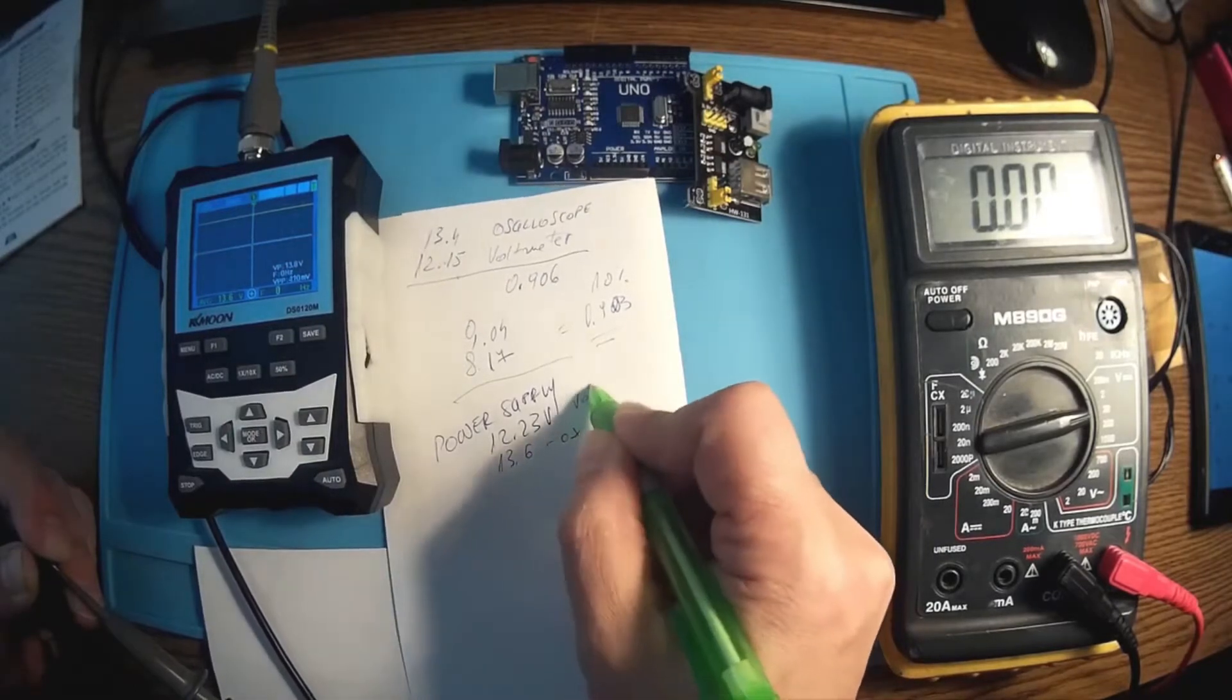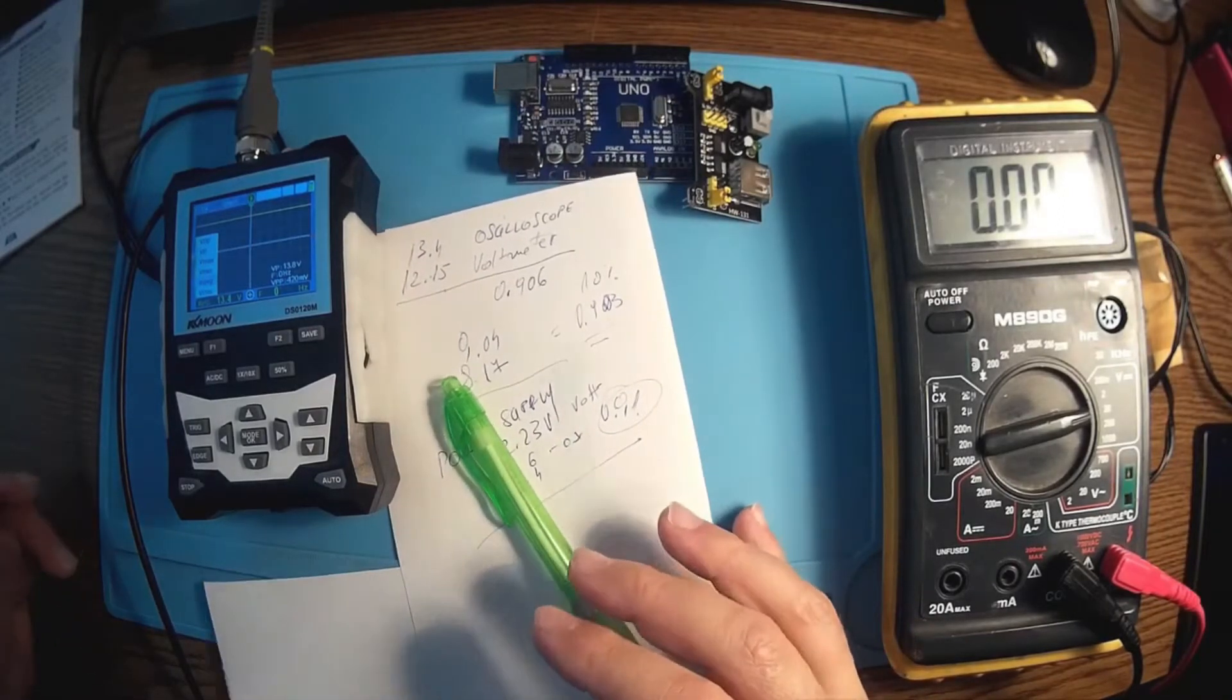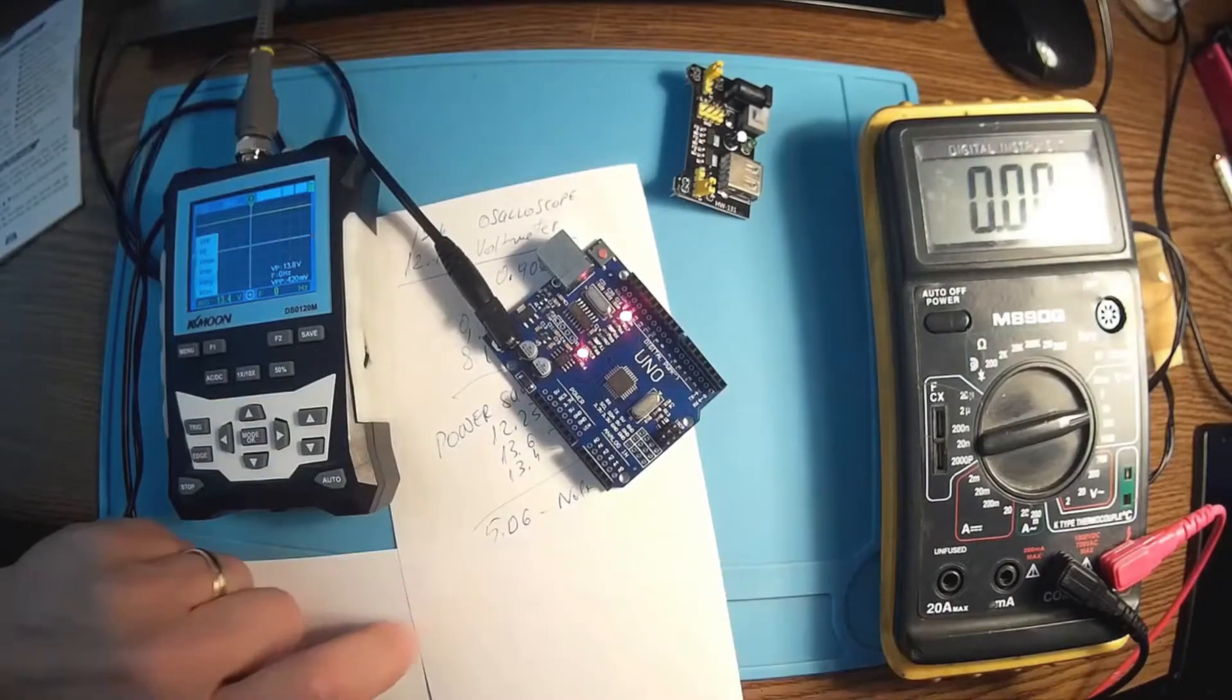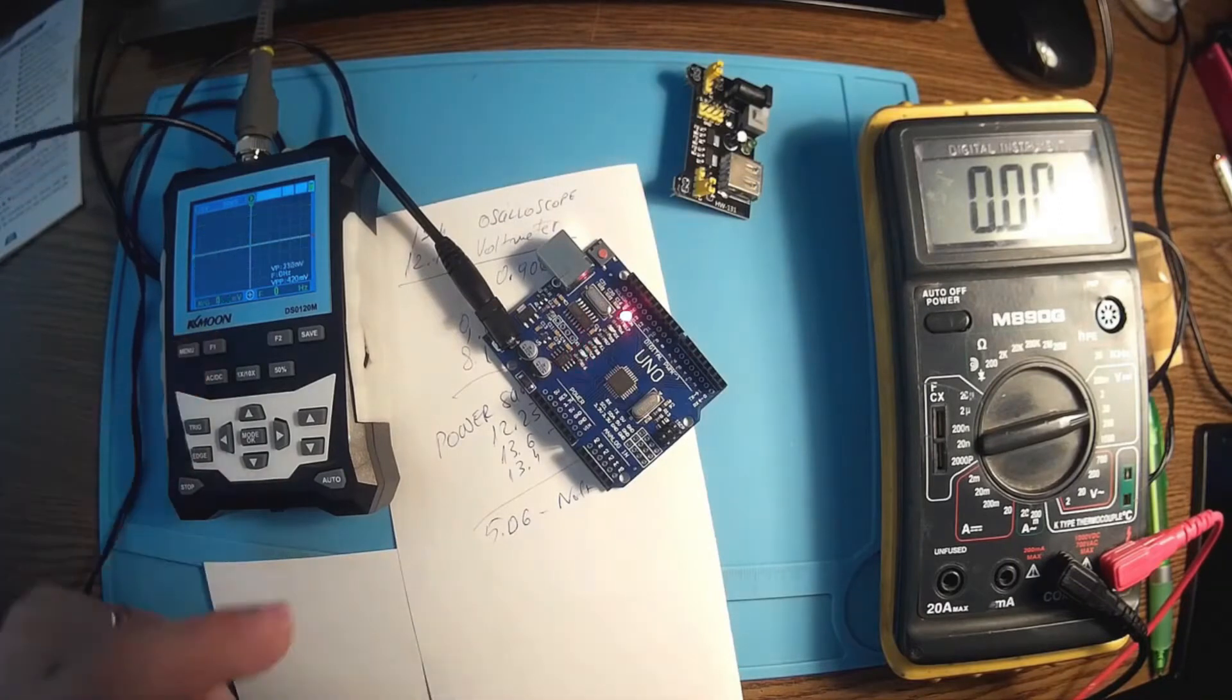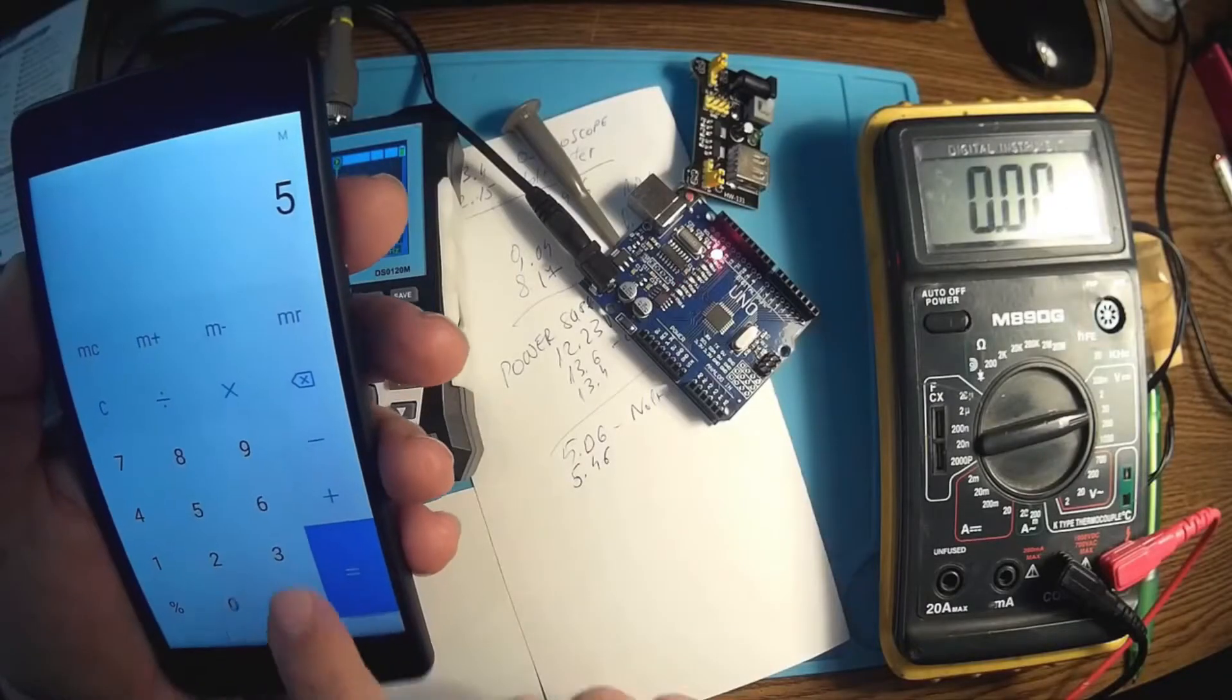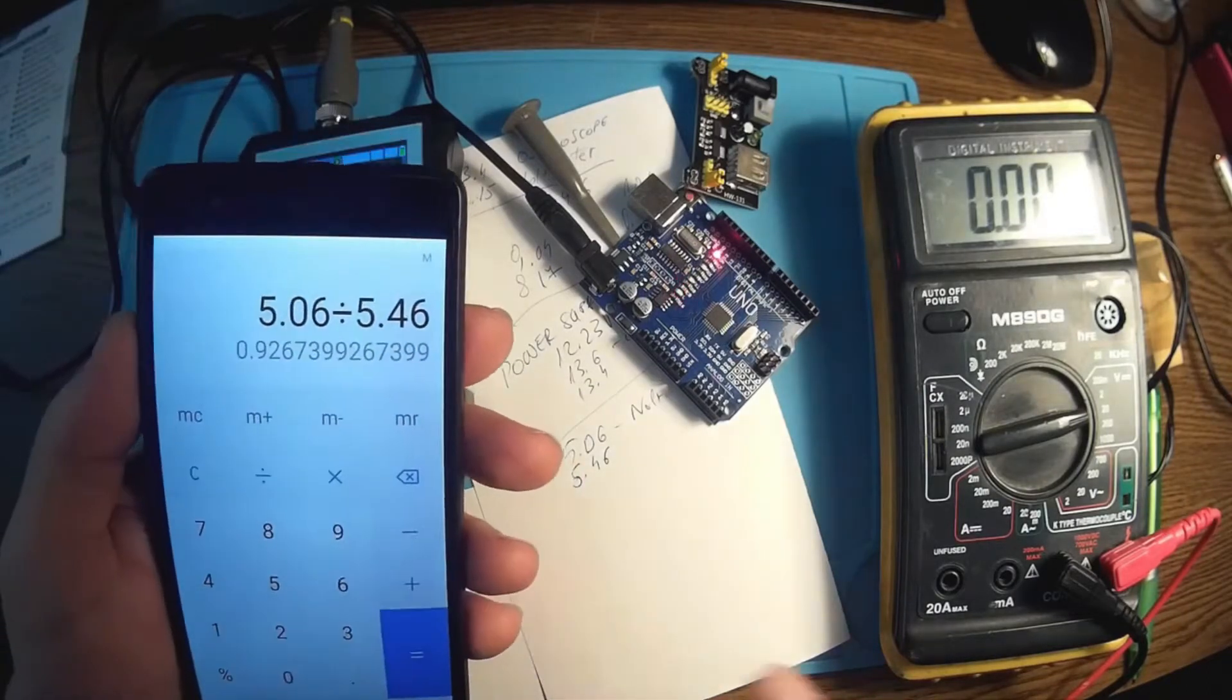So 13.6 on the oscilloscope and even 13.4 after a second measurement and 0.91, so 9.1% difference. Now let's see the Arduino, it's supposed to have 5 volts there and we have 5.06 by the voltmeter and we have like 5.46 by the oscilloscope. So the ratio is the same.